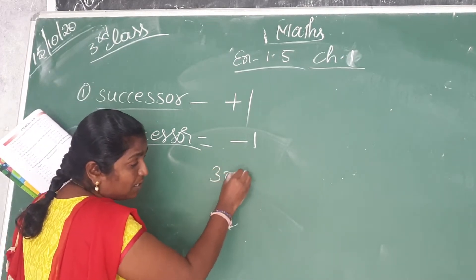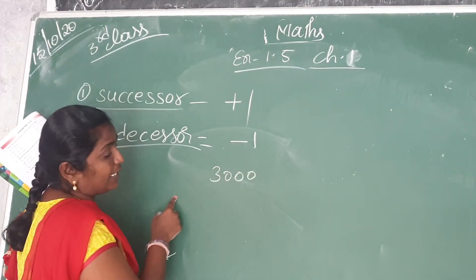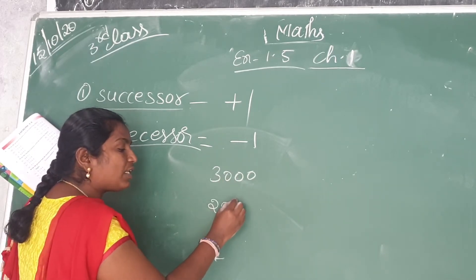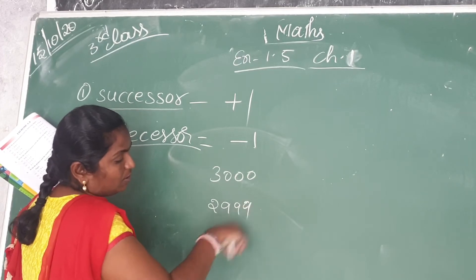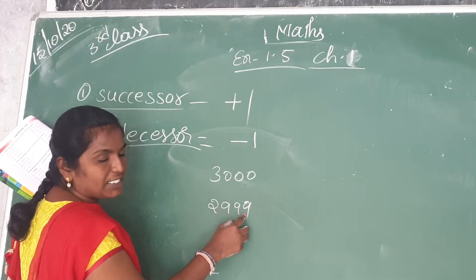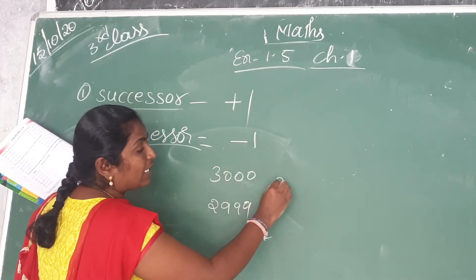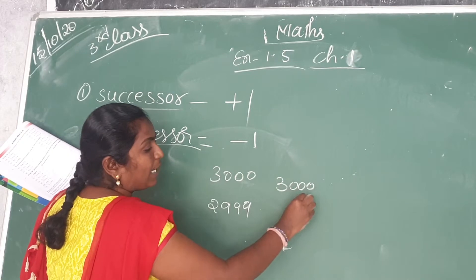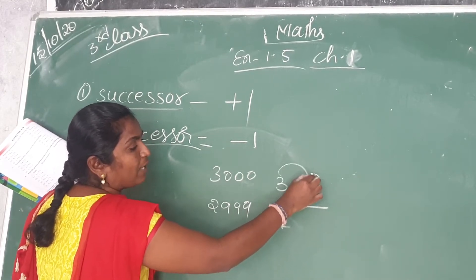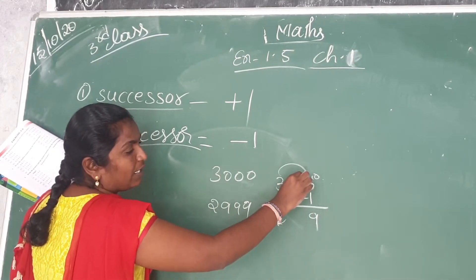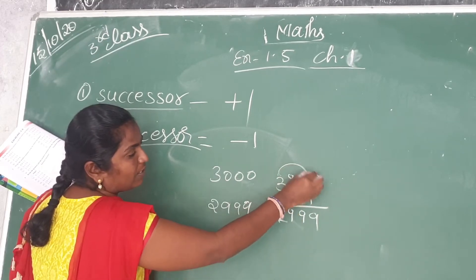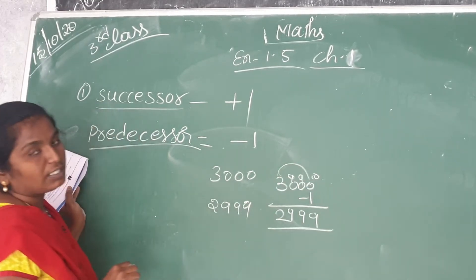For example, what is the predecessor of 3000? The just-before number of 3000 is 2999. Or else you can subtract 1. 3000 minus 1: 0 minus 1, you borrow 10, 10 minus 1 is 9; borrow again, 9; borrow again, 9; 3 minus 1 is 2. So the answer is 2999.